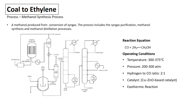Next we proceed with the methanol synthesis process, where the syngas is converted into methanol. The process includes syngas purification, methanol synthesis, and methanol distillation. The reactor is operated under a temperature of 300 to 375 degrees Celsius with a pressure of 200 to 300 atm. The hydrogen to carbon monoxide ratio is 2 to 1, and the catalyst used is a copper-zinc oxide based catalyst. The overall reaction is exothermic.